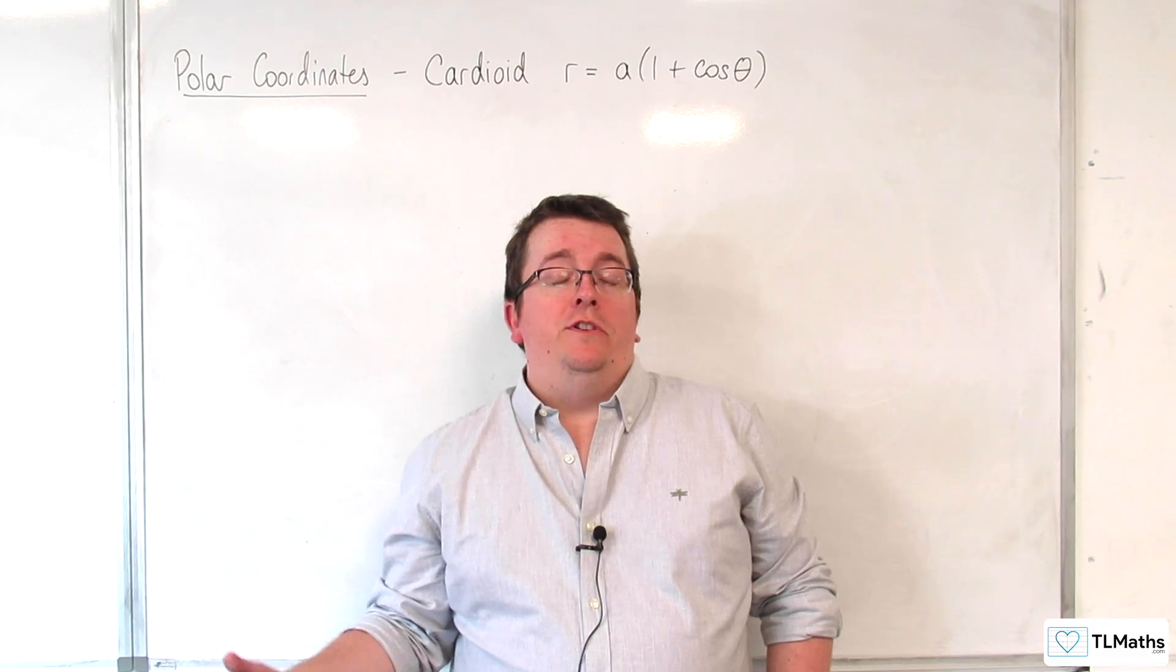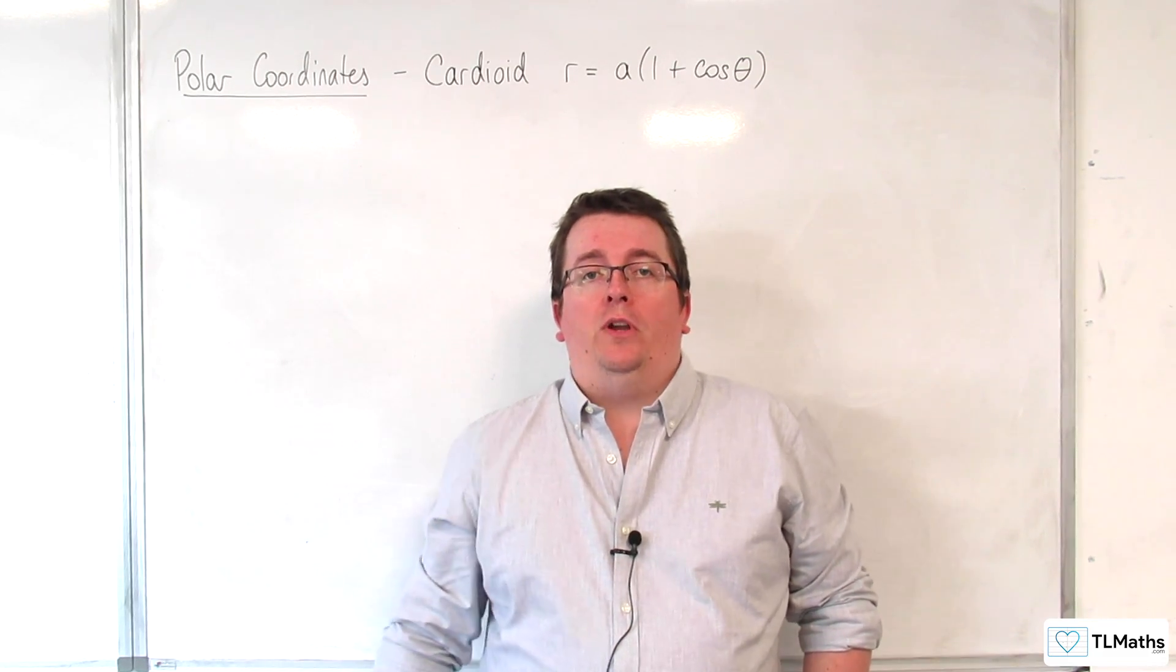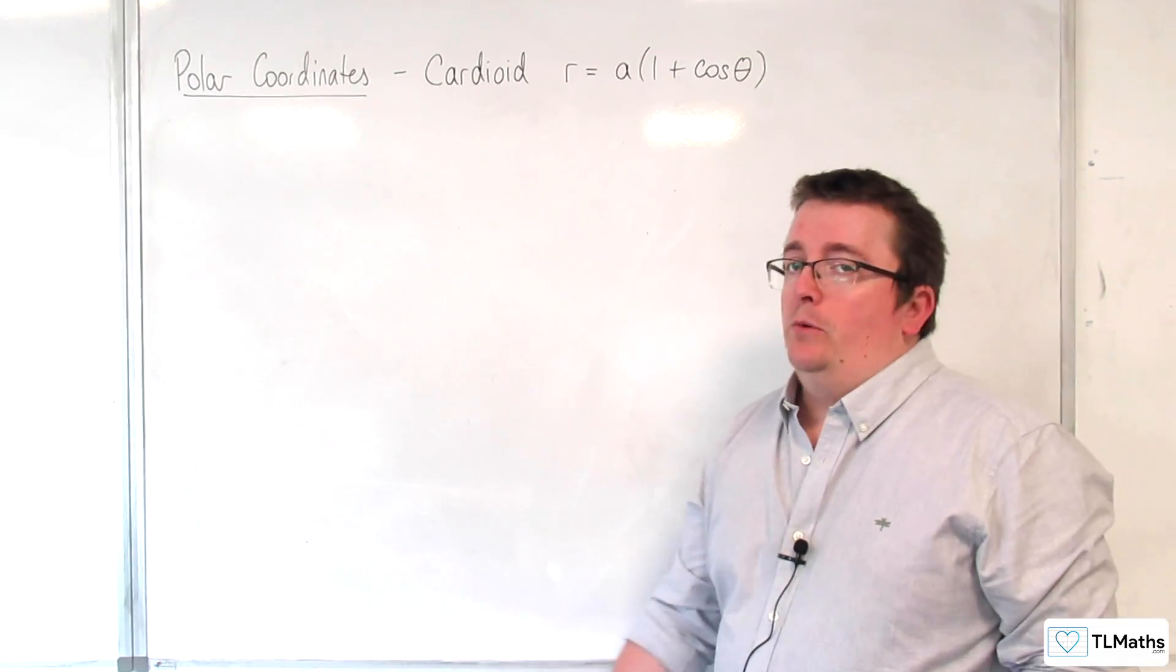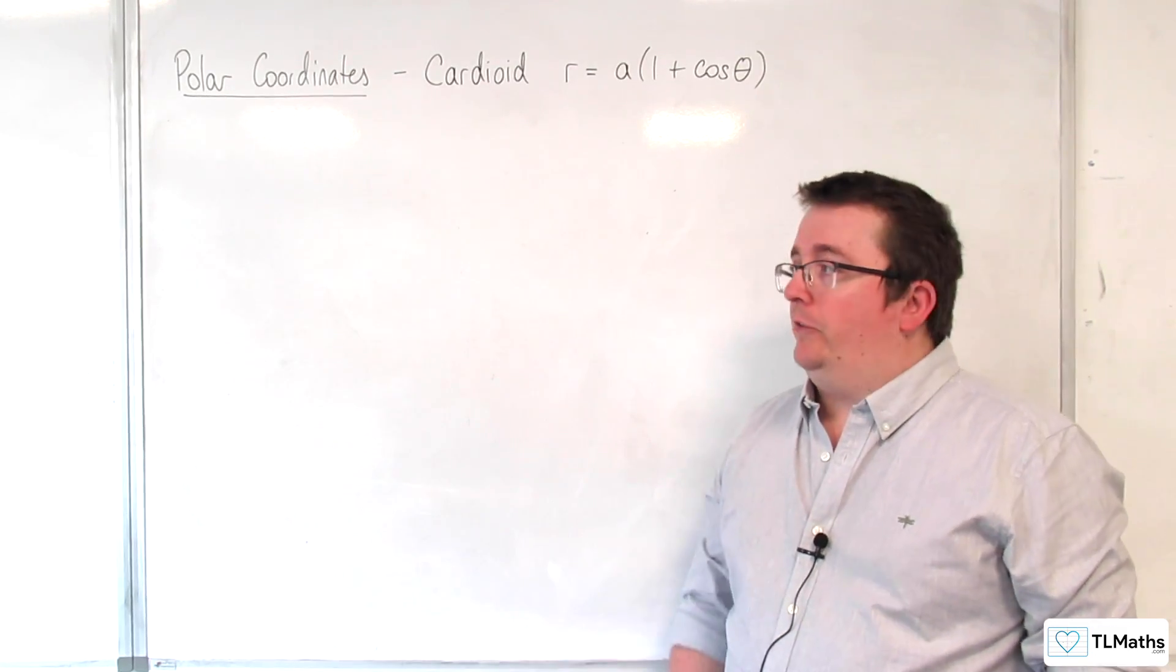So, we've already met one cardioid, R equals 2 plus 2 cosine theta. Now we're just going to look at them in general, so you know how to sketch them.